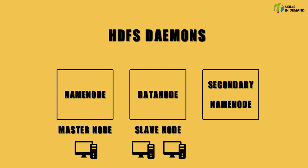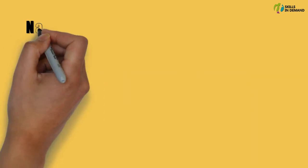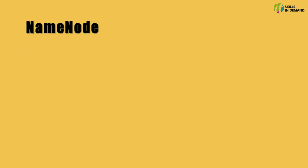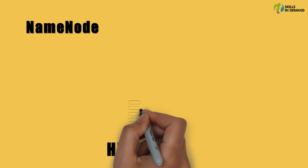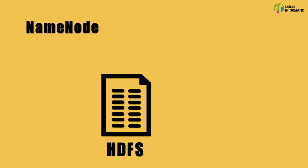Let us try to understand the functionality offered by each of these daemons. The name node is responsible for storing the Hadoop distributed file system's metadata. The metadata keeps track of all the files that are present within the Hadoop distributed file system.